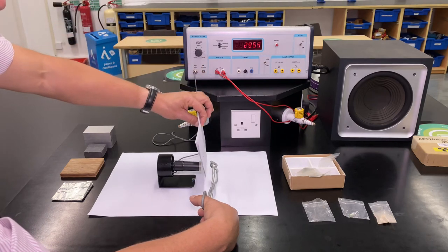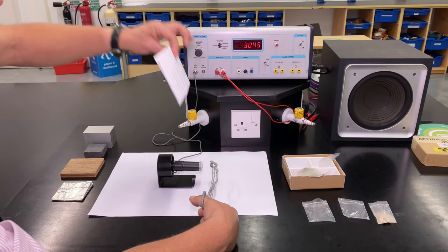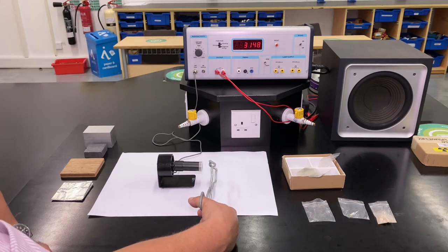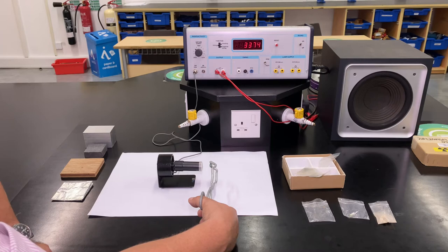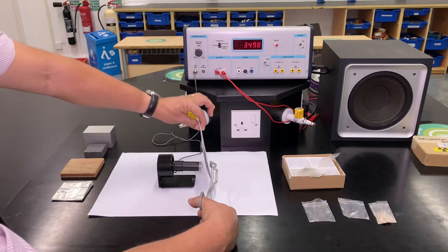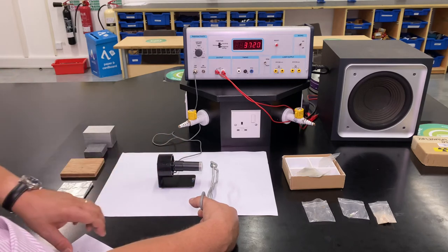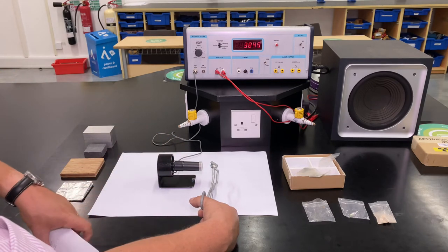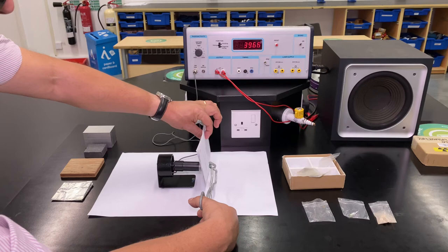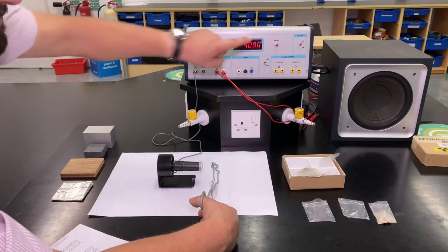Right, no change whatsoever. So what does that tell us? Does this radioactive rock give off alpha particles? Well, the answer would have to be no. There's no alpha emission from this, because if there was some alpha, then putting the paper would make the count rate go down.